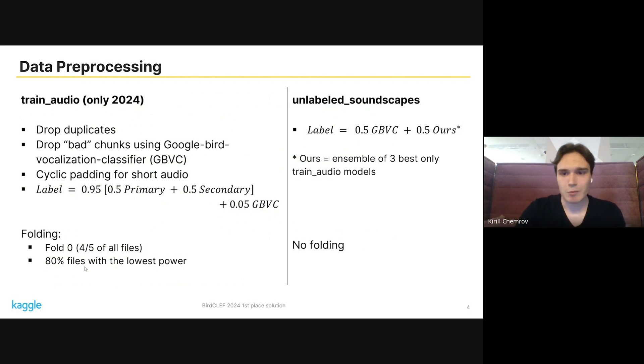As for unlabeled soundscapes, they have no labels and we have to make several labels. For this we use both Google classifier and our models. It's just three EfficientNets trained only on train_audio. The difference is that we use different folds and choose three best folds.